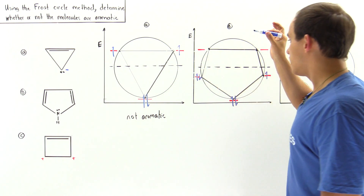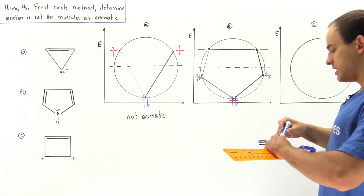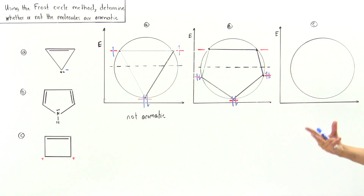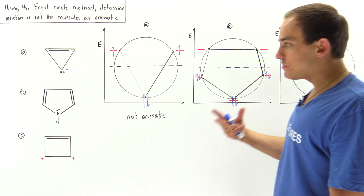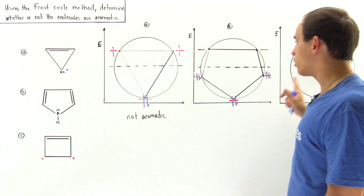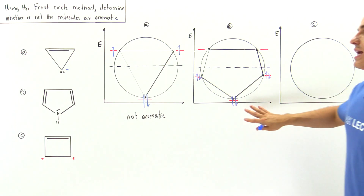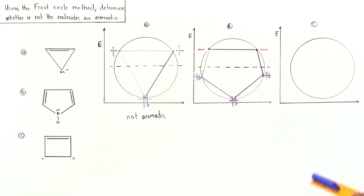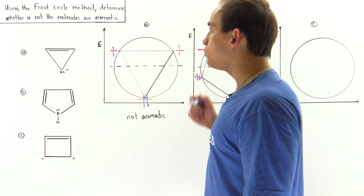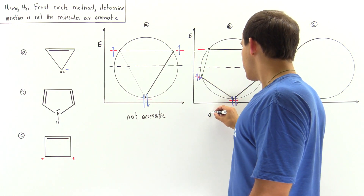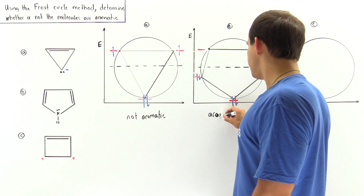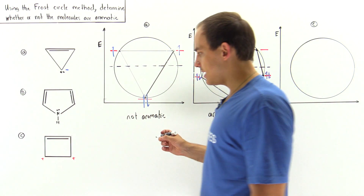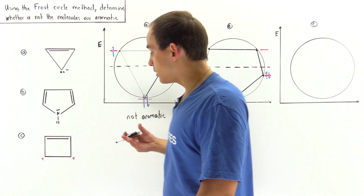We have six pi electrons to fill: two go into the bottom bonding orbital, then one into the second, one into the third, one into the fourth, and one into the fifth — all fitting into the lower-energy bonding pi MOs, with none in the anti-bonding or non-bonding orbitals. This gives a stabilized, lower-energy system, and by the Frost circle technique, this molecule is aromatic.